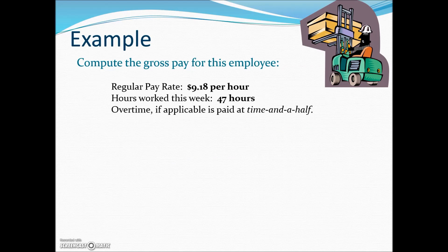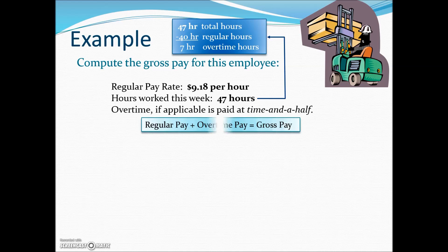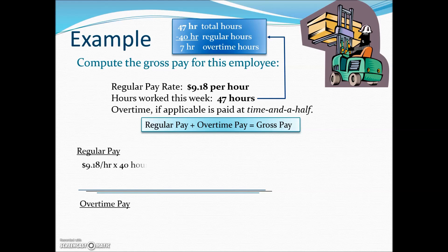Let's look at an example. The normal pay rate is $9.18 per hour, and the hours worked this week is 47 hours. Overtime, if applicable, is paid at time and a half. Of the 47 hours, 40 would be the regular work week, leaving a difference of 7 hours in the category of overtime. The straight pay or regular pay would be $9.18 times the 40 hours of regular hours, and that product results in the regular pay.